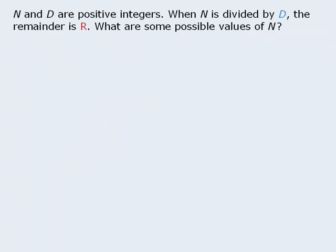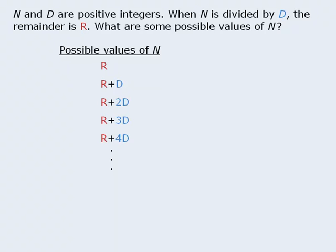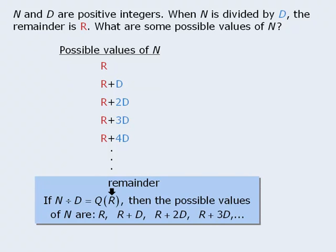In general, if we're told that some number n divided by d yields a remainder of r, then the possible values of n will begin with the remainder r. The next possible value will be r plus the divisor d. Then r plus 2d, then r plus 3d, and so on. So we now have a formula for listing possible values of a number if we're given information about the remainders and the divisors.